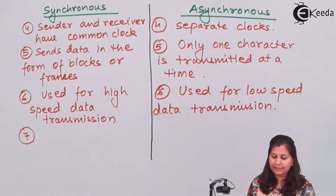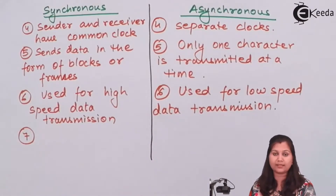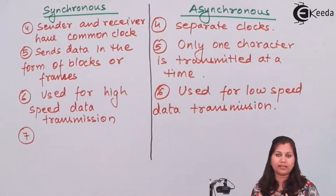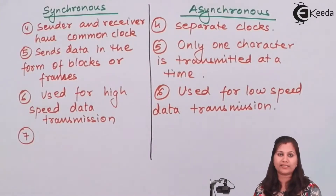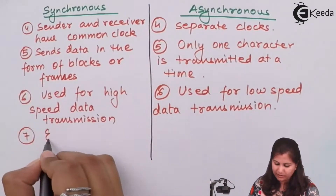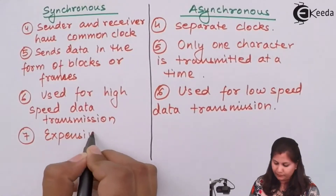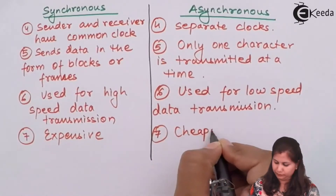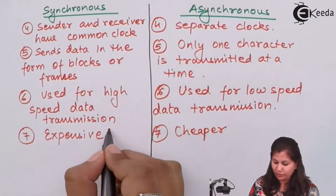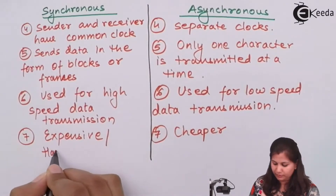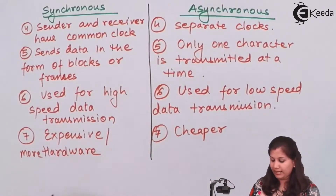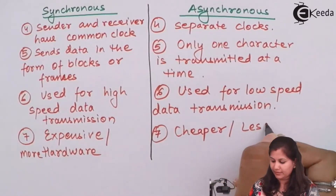The next difference is that in synchronous, two signals are required — one is the clock signal and the second is the data signal — so synchronous requires more circuits and more hardware. We can say that the synchronous method is an expensive method, whereas asynchronous is cheaper. Synchronous is expensive because it requires more hardware, whereas in asynchronous less hardware is required.